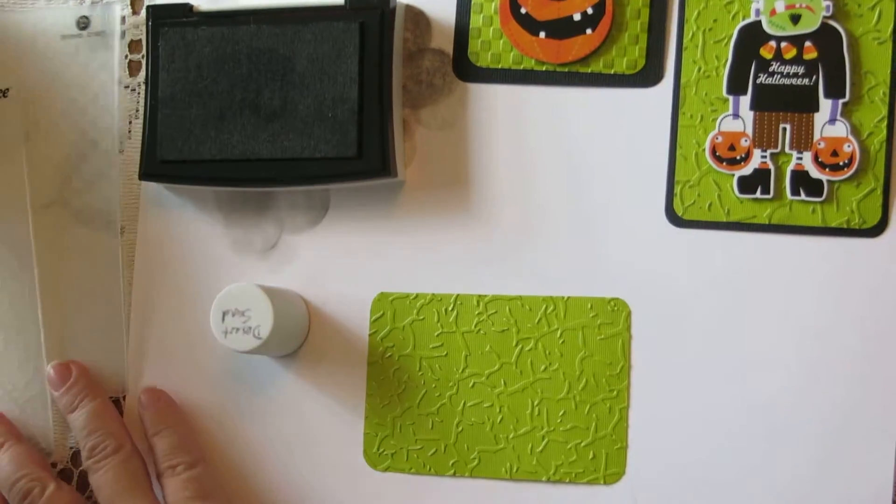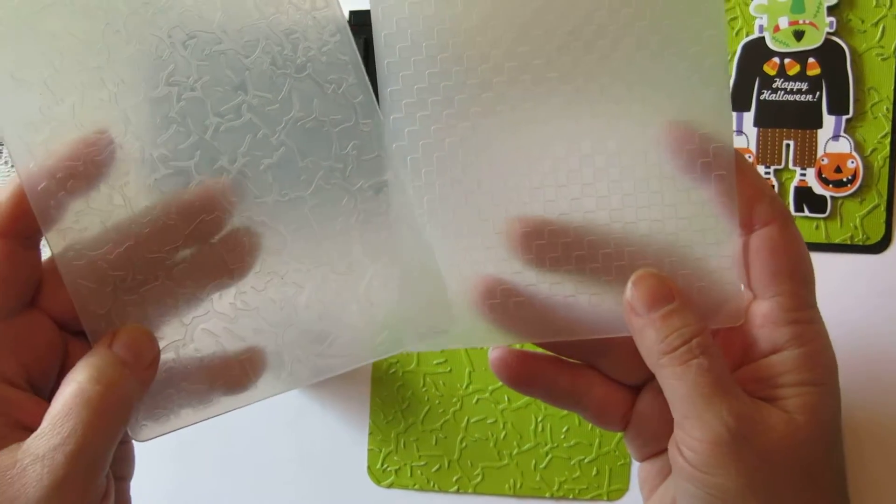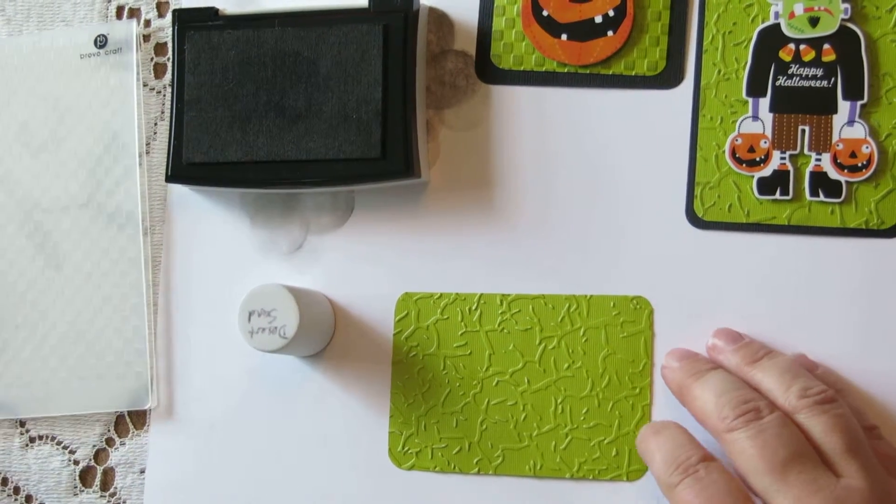I picked two embossing folders today, one by Cuddlebug. It's sort of a checkerboard design and a Darice folder. It's the crackle design. You can use this on any embossing folder though.